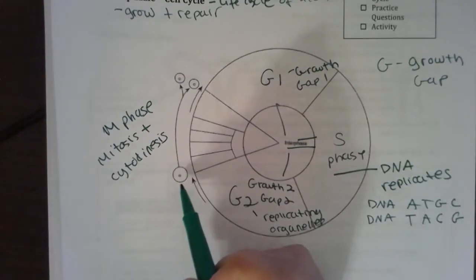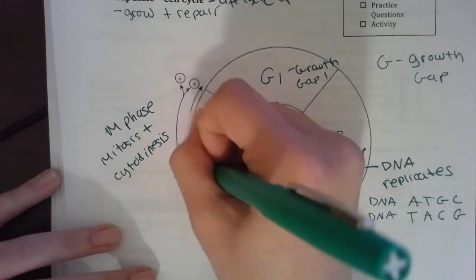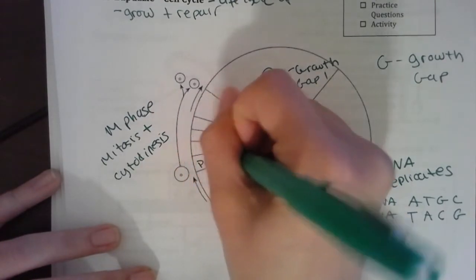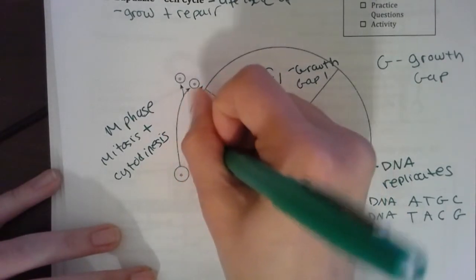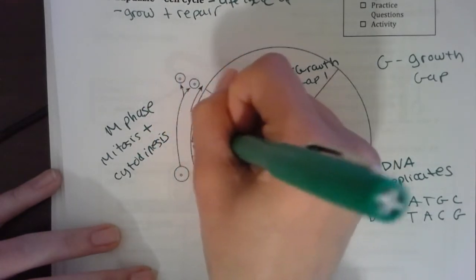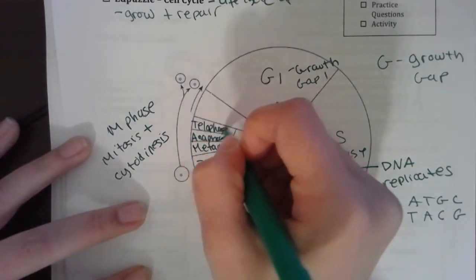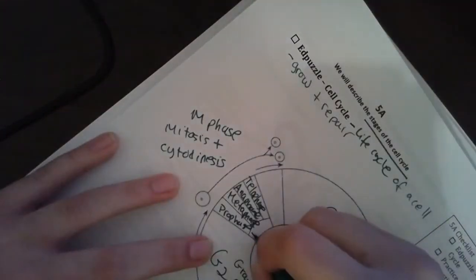Mitosis is made of four phases: prophase, metaphase, anaphase, and telophase. That is mitosis.